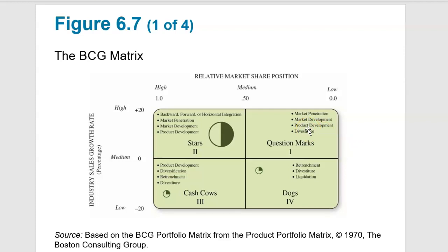The BCG matrix has four categories: question marks, dogs, cash cows, and stars. Cash cows are steady businesses we're milking for money. Dogs are businesses in retrenchment or not doing well. Question marks are unsure of where they're going. Stars represent your best growth potential industries. Looking at industry sales growth rate versus relative market share position helps formulate this matrix.